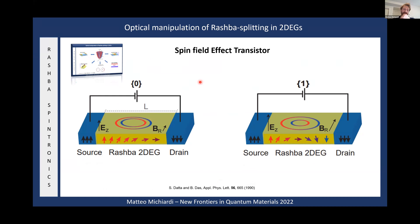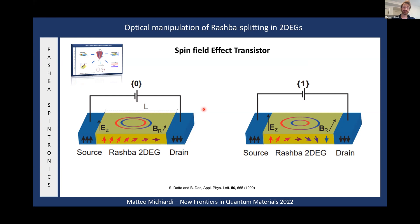In a spin transistor device, spin-polarized electrons are injected into a two-dimensional electron gas. In a Rashba state, those electrons feel an effective magnetic field proportional to the Rashba splitting, so the spin precesses until reaching the drain. If we can tune the Rashba parameter strength, we can align or misalign the spin polarization with the drain, switching the device between high and low resistance — nominally a zero or one state. This is usually achieved by controlling the perpendicular electric field via static electric gating.